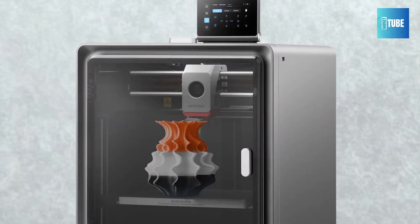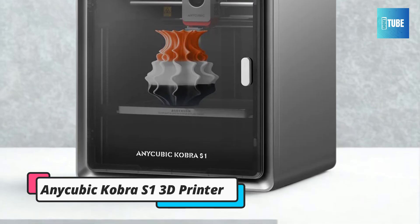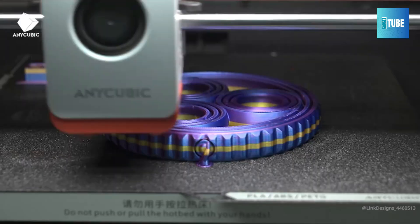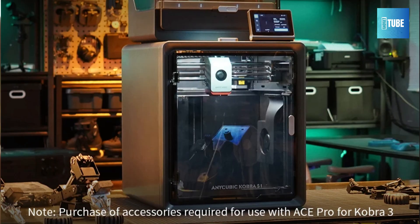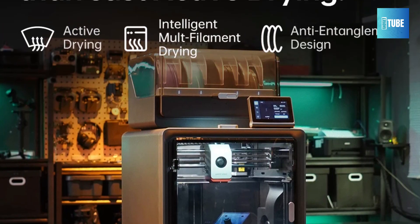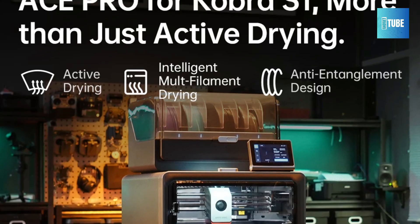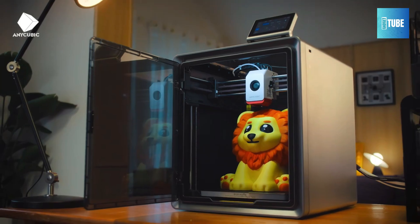Number 3. Anycubic Cobra S1 3D Printer. The Anycubic Cobra S1, a fast and precise 3D printer designed for hobbyists and home projects. Its sturdy Core XY structure ensures stable and accurate printing. With a maximum speed of 600mm per second, it delivers quick results without sacrificing quality.